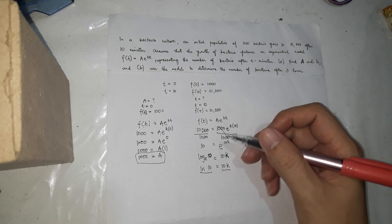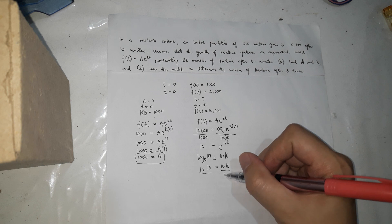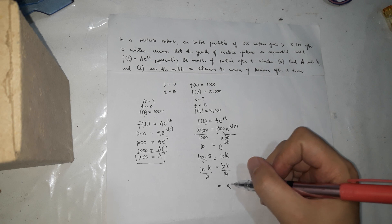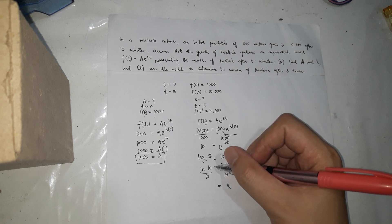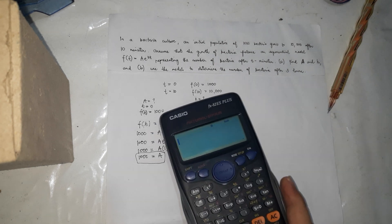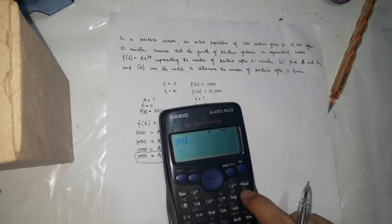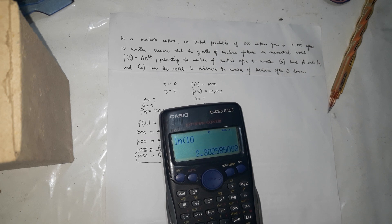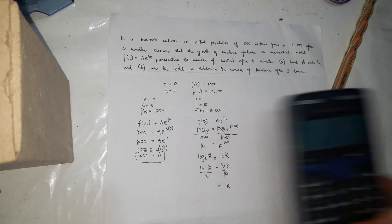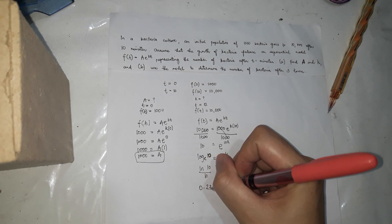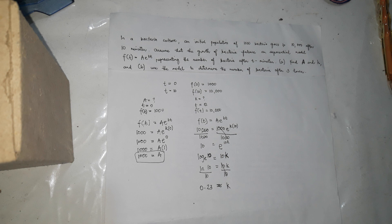Divide both sides by 10, which is beside k. So divide by 10. So k now, cancel. So k remains. ln of 10 divided by 10. And that's, using the calculator, ln of 10 divided by 10 equals 0.23. So approximately, because it's rounded off, 0.23. So k equals 0.23.